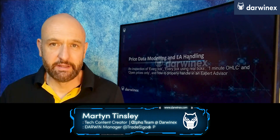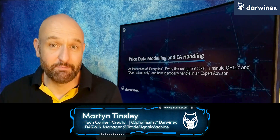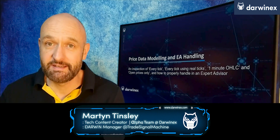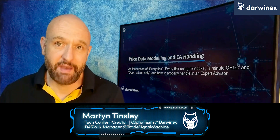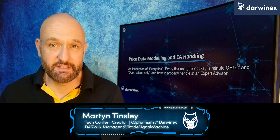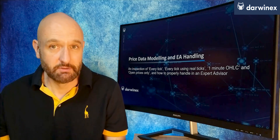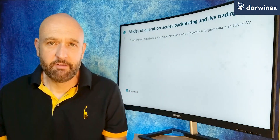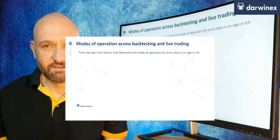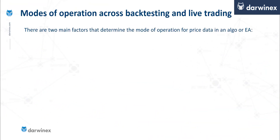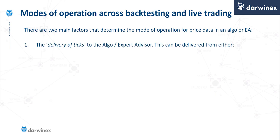We're going to consider how price data modeling needs to be used to help obtain backtest results that are truly indicative of what you could expect if you put the system into a live trading account. Otherwise, what's the point of doing backtesting? There are two factors that determine the mode of operation for price data. The first is the delivery of ticks to the algo or the expert advisor.